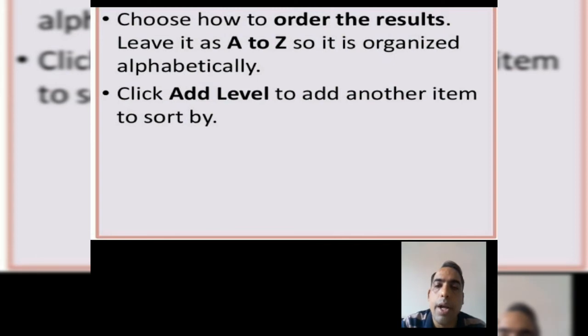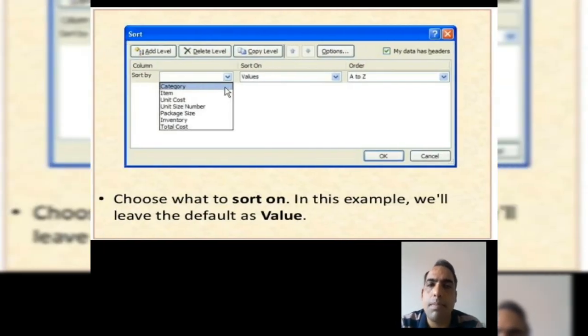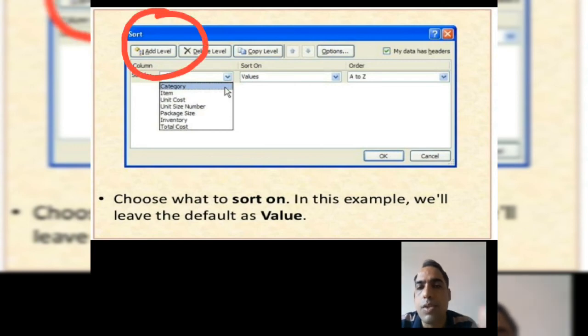Then click on add level to add another item to sort by. You can see in this diagram. Add level is the option for adding more items.